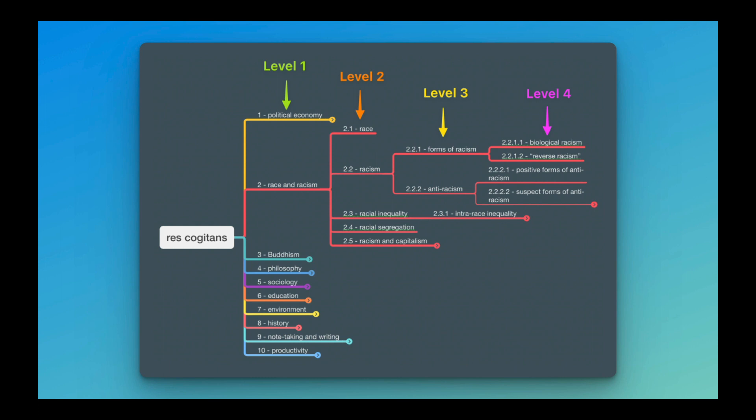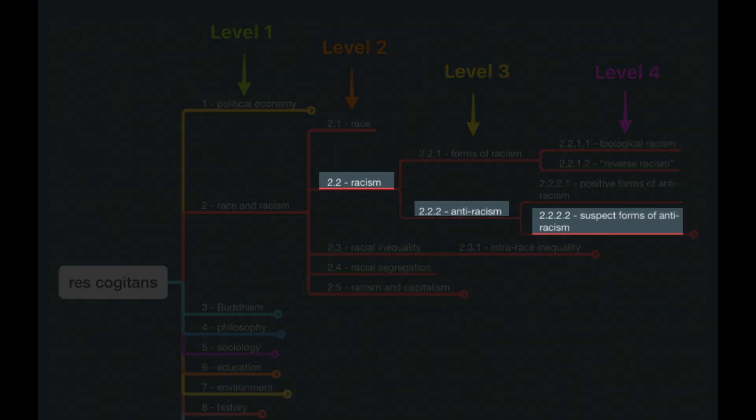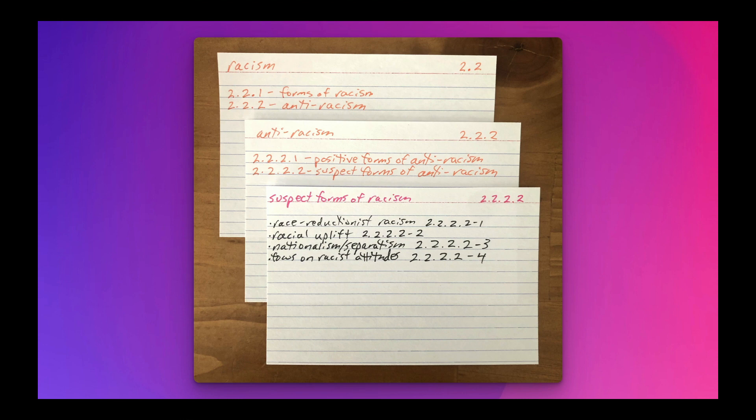For levels two, three, and four of my race and racism branch, I have created folder cards. The next image shows you what these three folder cards look like in my old school Zettelkasten. Usually I write the titles and addresses for folder cards in pink so as to distinguish them from my idea cards, the titles and addresses of which are written in blue. The fact that I have two folder cards here that are in orange rather than pink kind of drives me crazy. But I'm on meds for that.